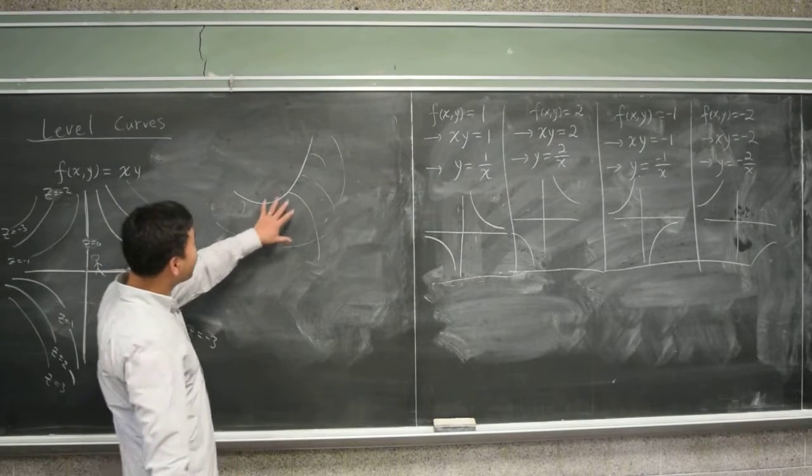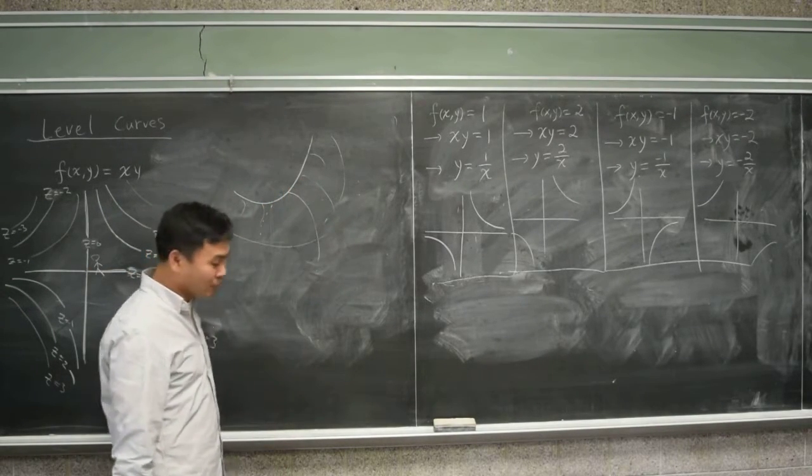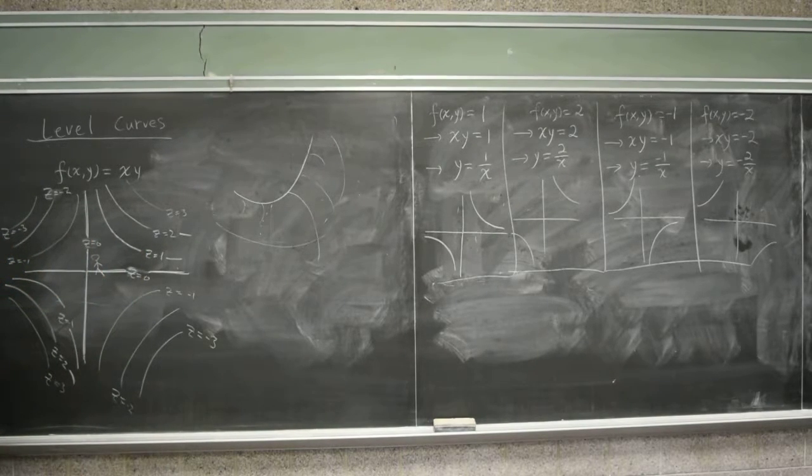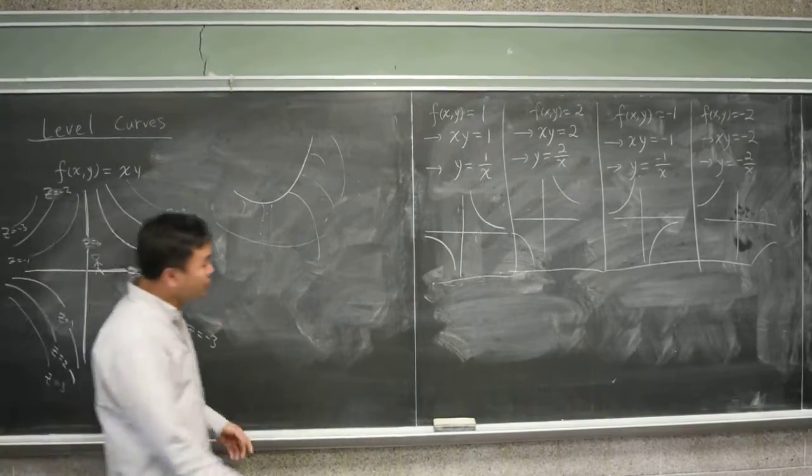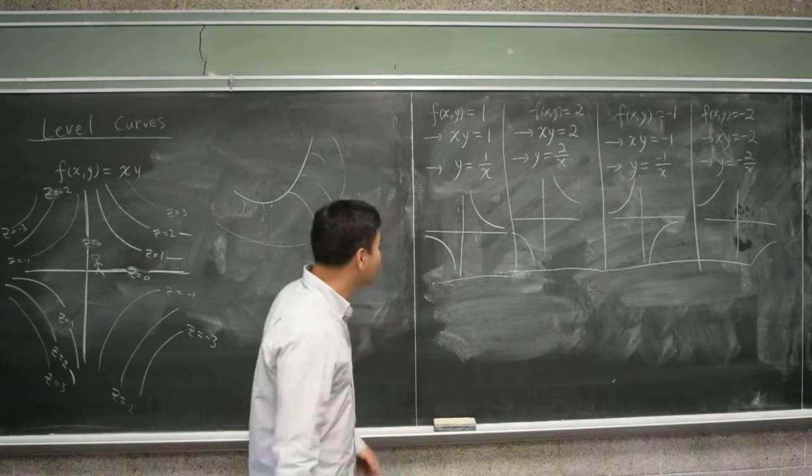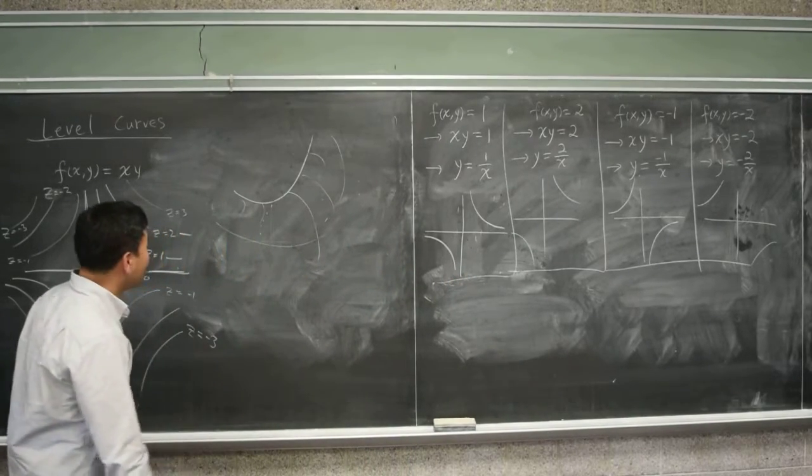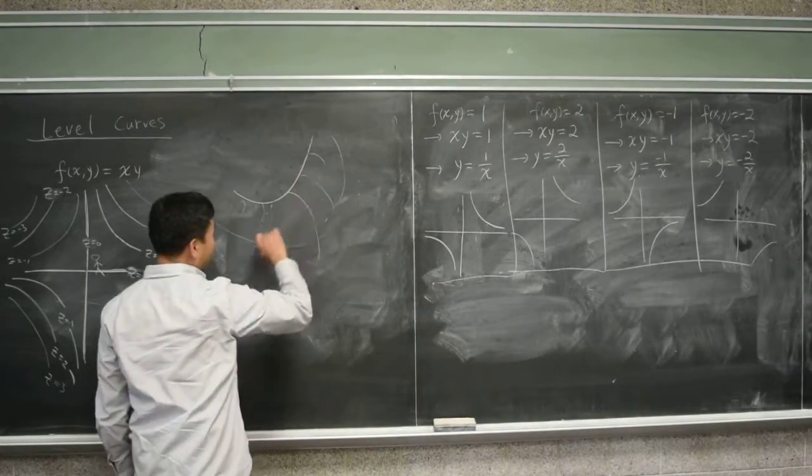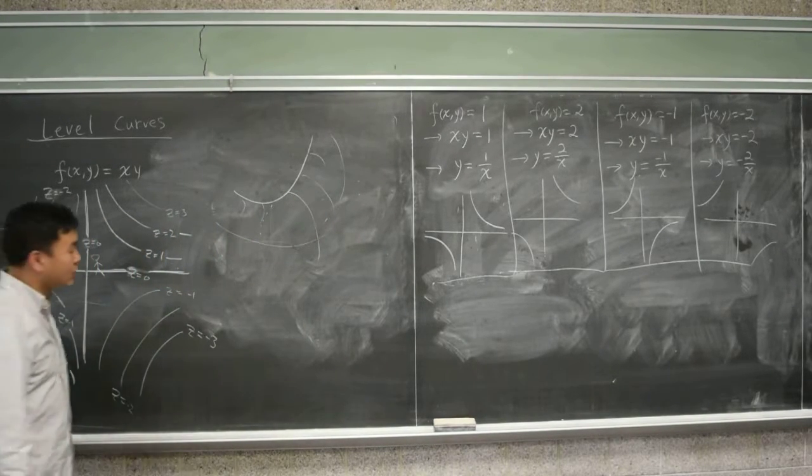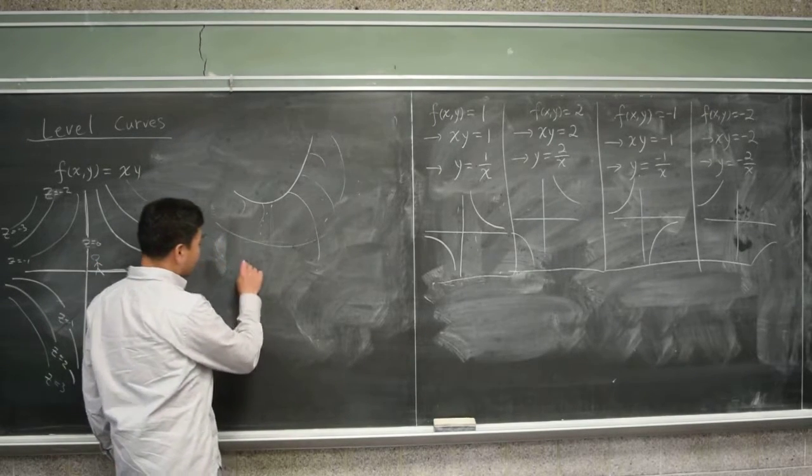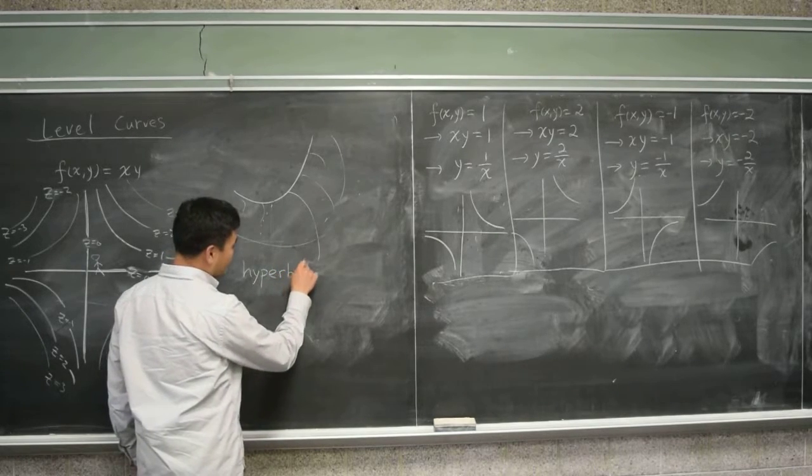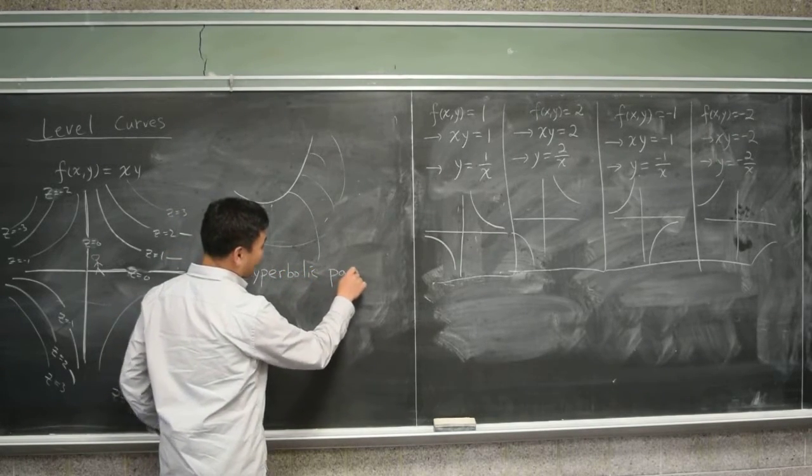Now, this kind of surface has a name. One name is that these curves here, these are called hyperbolas. These are called hyperbolas. And also, if you look at it this way or that way, those are parabolas. So, the name for this is hyperbolic paraboloid.